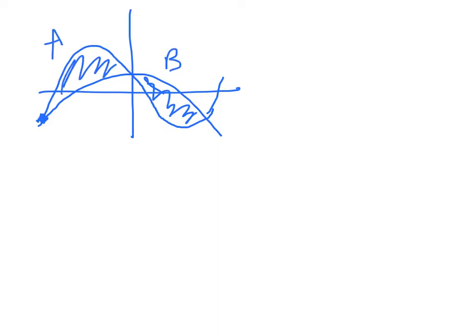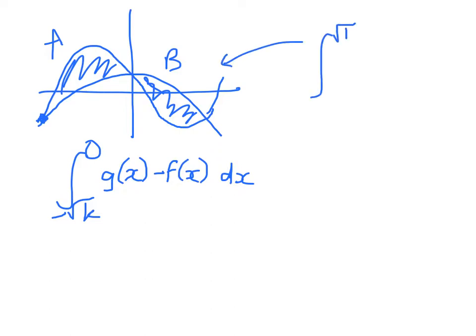Area A is the integral from -√k to 0 of g(x) - f(x) dx. And area B is the integral from 0 to √k of f(x) - g(x) dx. Next we'll pop in the values.